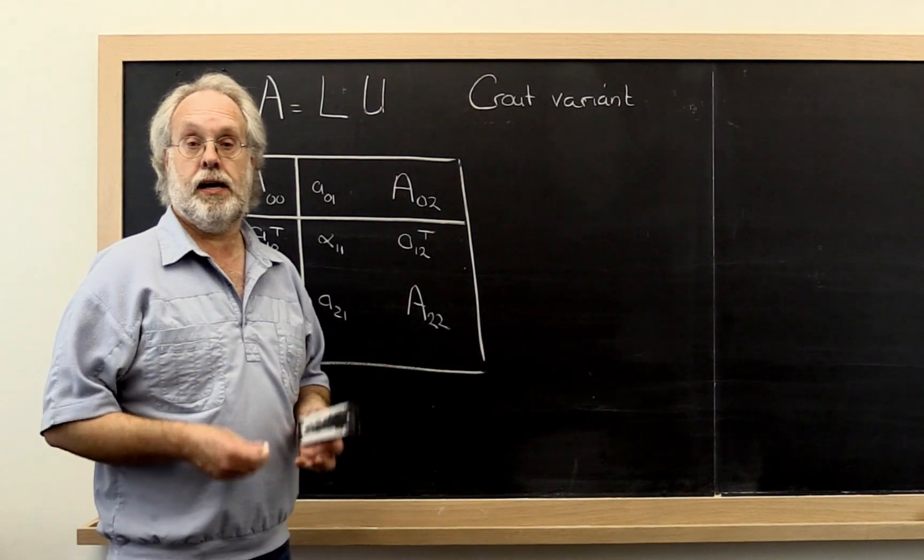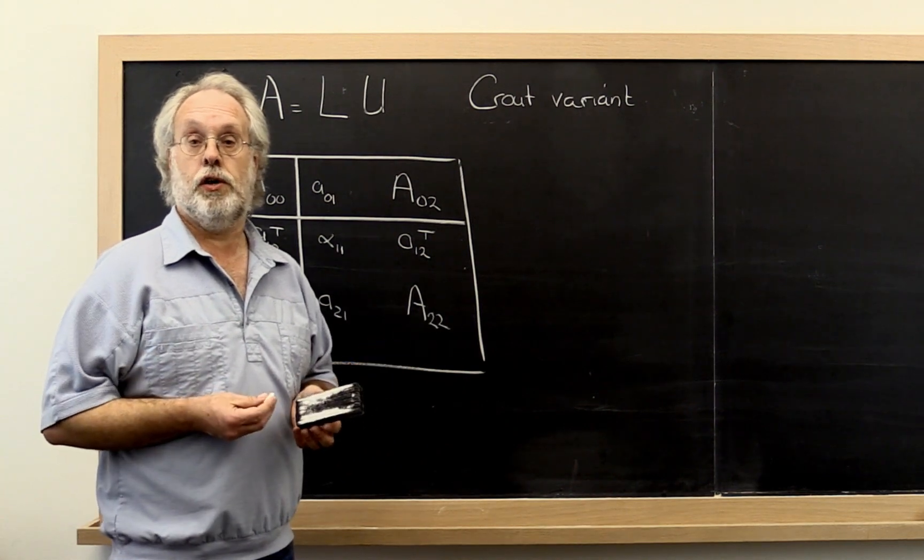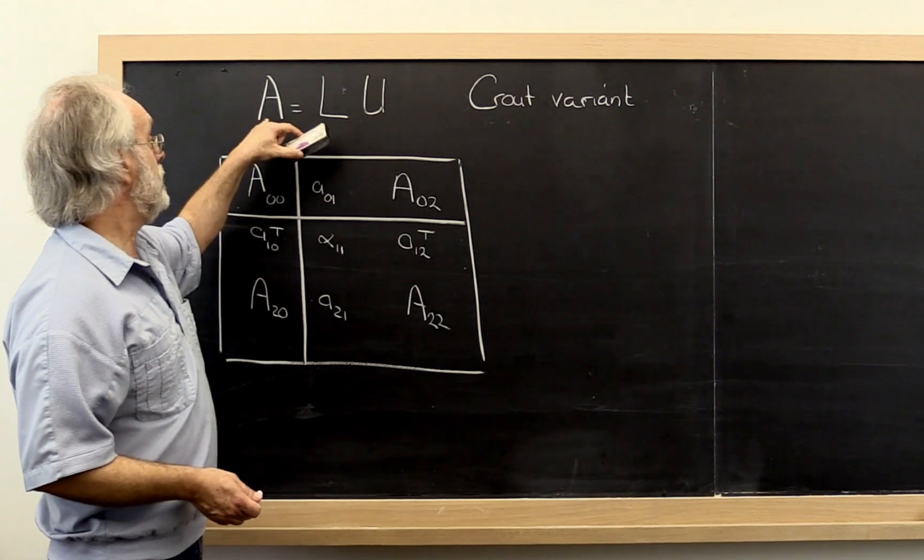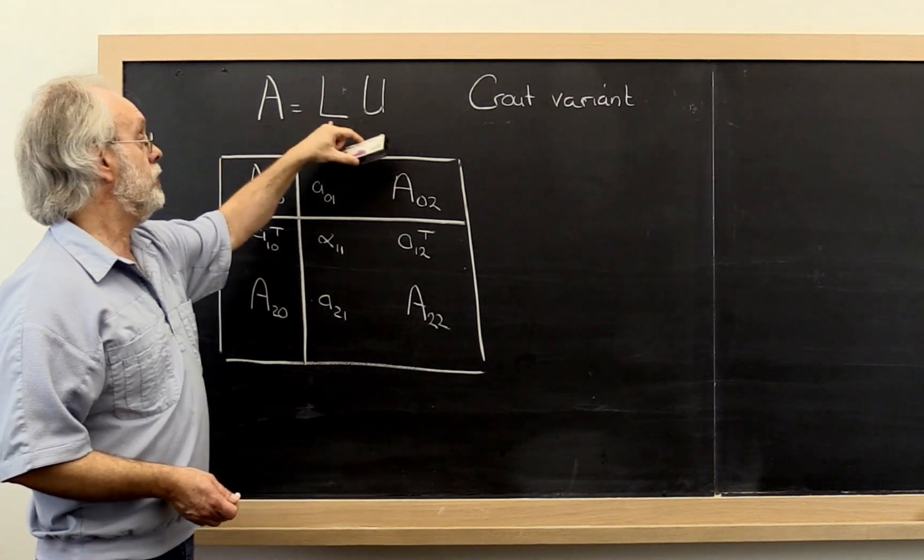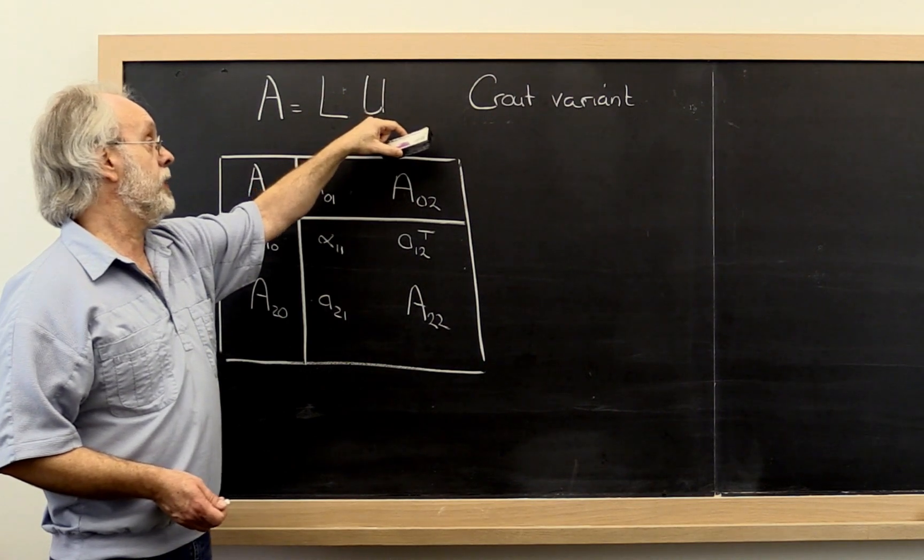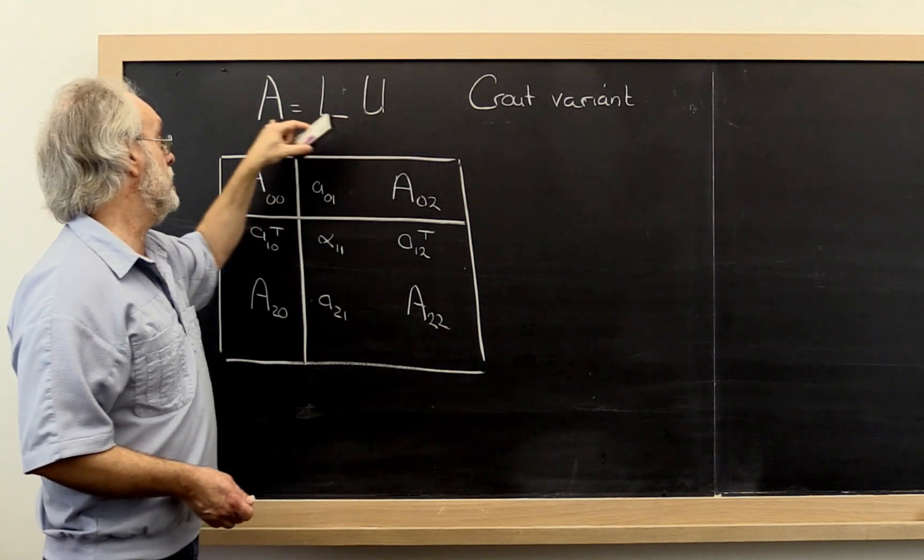Now we're ready to discuss backward error results for LU factorization. The purpose is to take matrix A and compute a unit lower triangular matrix L and upper triangular matrix U such that L times U is equal to A.